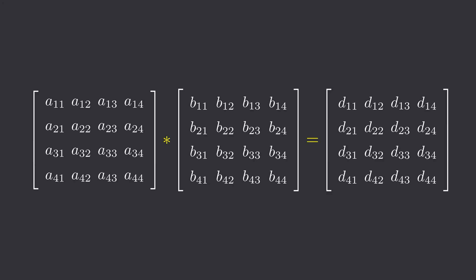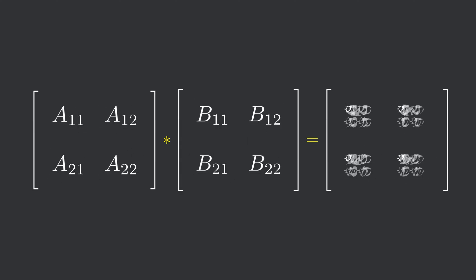Now, these matrices have not reached the base case yet. That is, they are still not 2x2, so we will repeat the steps again. We will divide the matrices into 4 sub-matrices and repeat the same process as before.